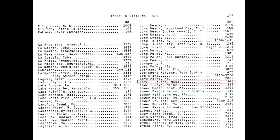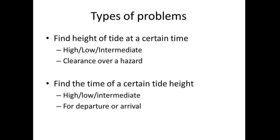This is the index of stations — an alphabetical list of stations along the east coast of the Americas. If you're trying to find a particular place, you look it up here, get a number, and then take that number back to table two — the tidal differences — where that number is the identifier you use to find the station.